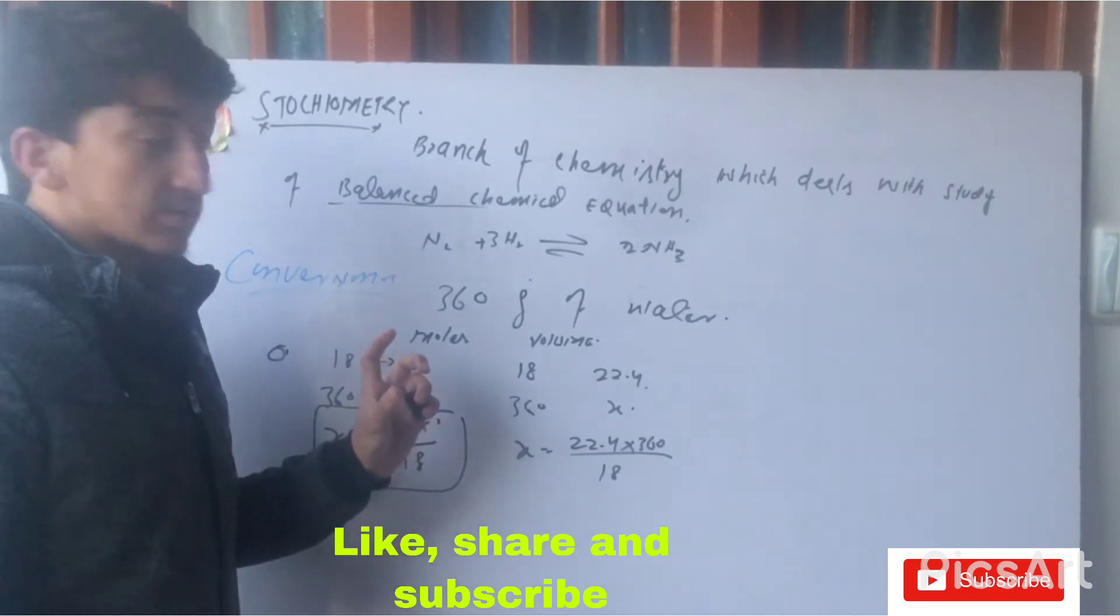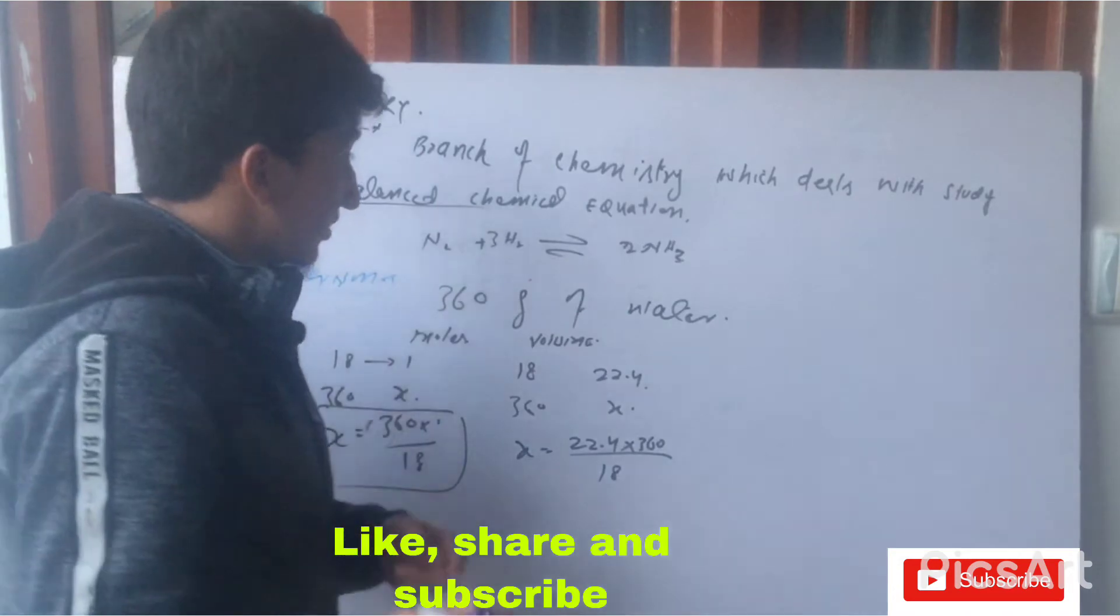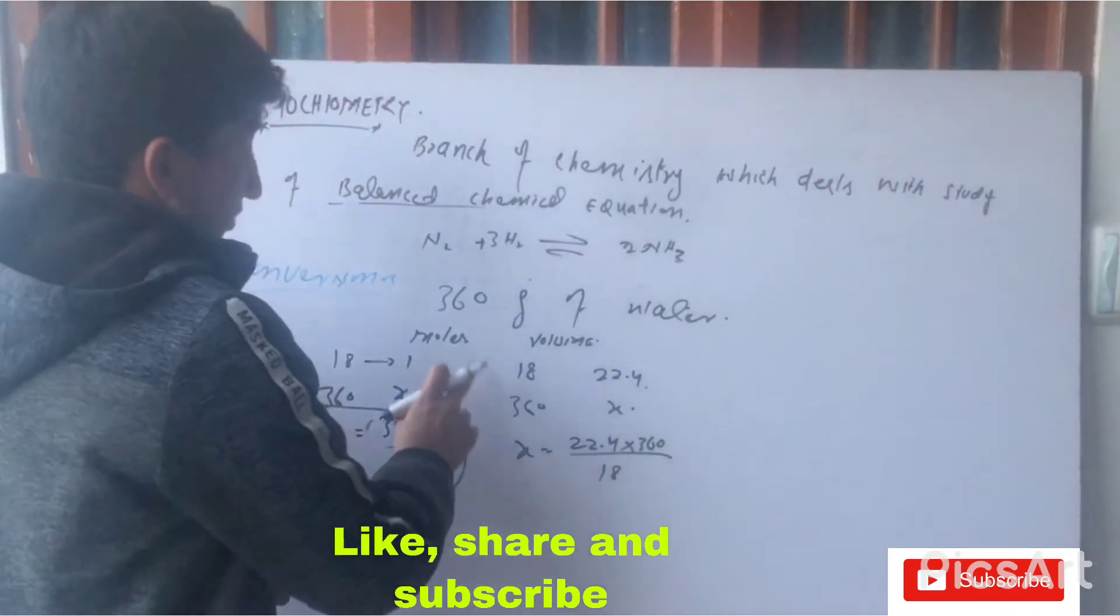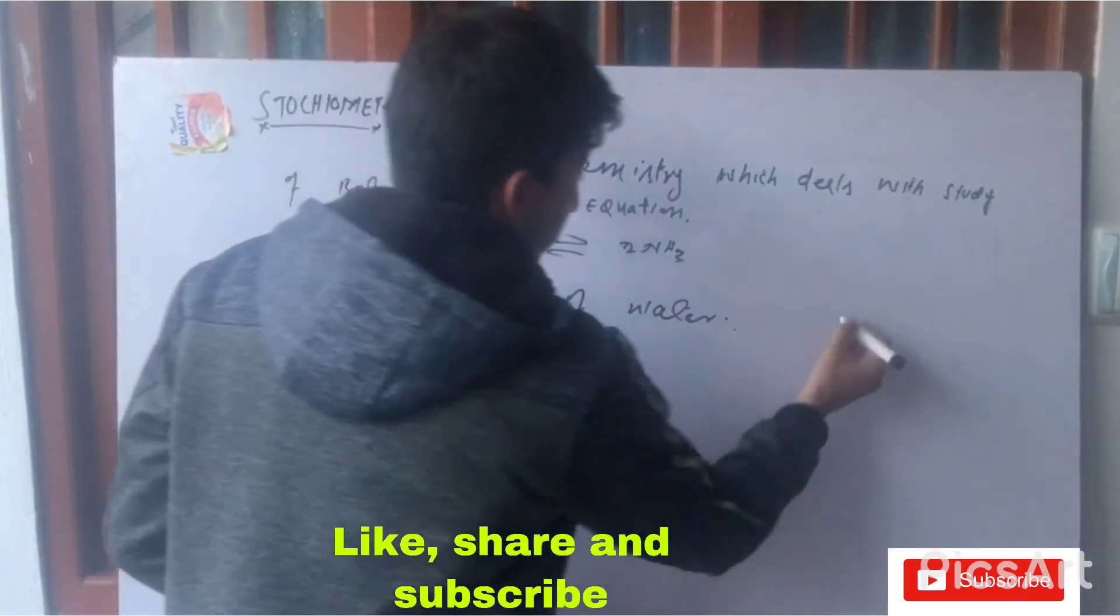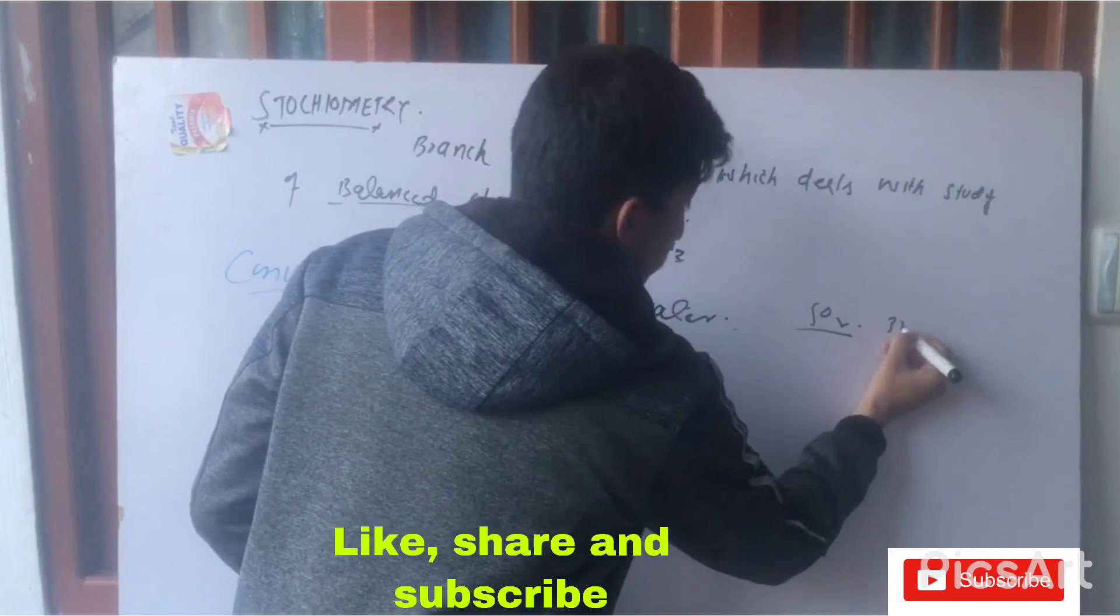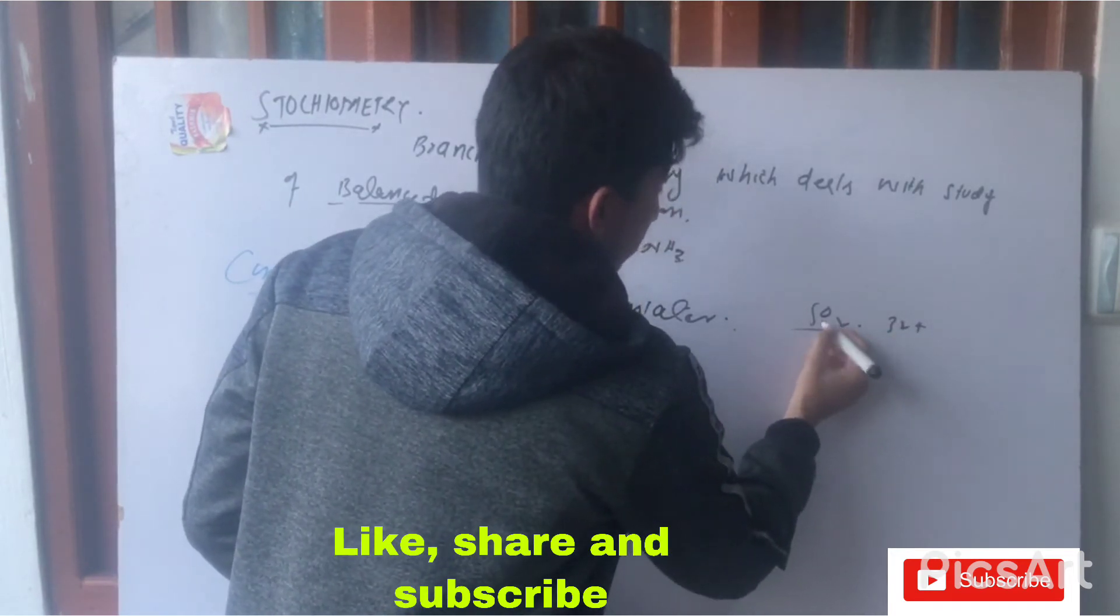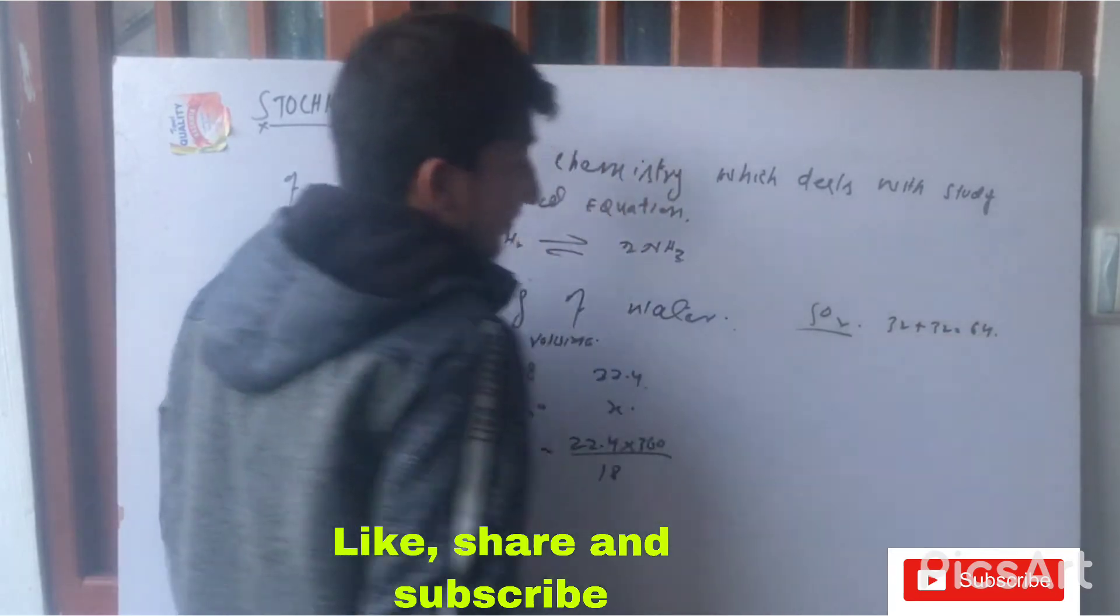This is quick revision, so those students who are fresh students, we arranged complete concept lectures for them. I recommend you to watch those lectures. Here we're going to talk about another question: SO2. As you can see, the molar mass of SO2 is 32 plus 16 into 2, which equals 64.